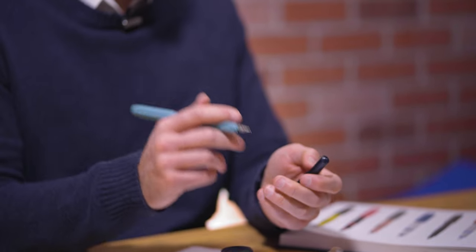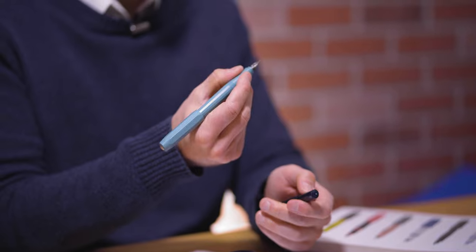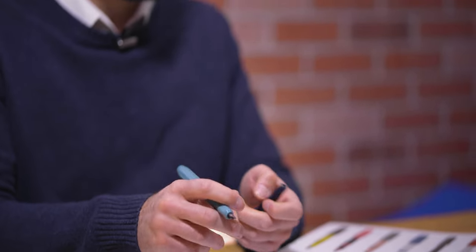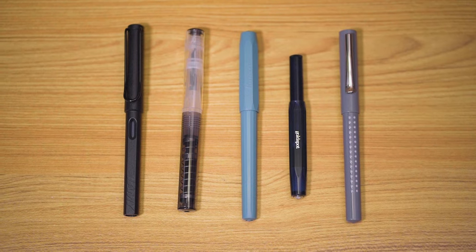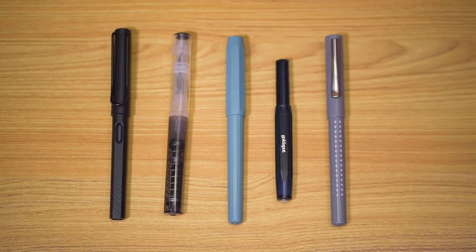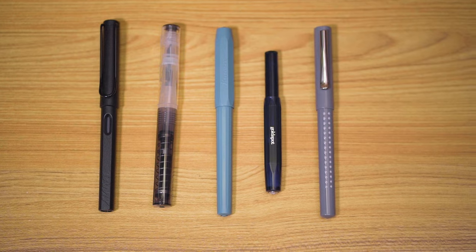The grip section on the Perkeo is longer, wider, and contoured to be more ergonomic and accommodating for beginners. Here is a size comparison where we stack the Kaweco Perkeo next to the sport, the Lamy Safari, Faber-Castell Grip, and Twsbi Go.